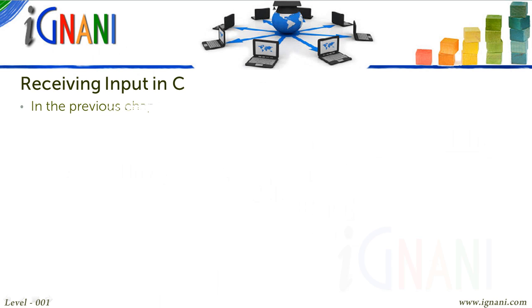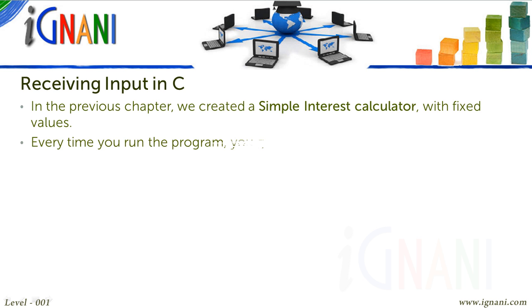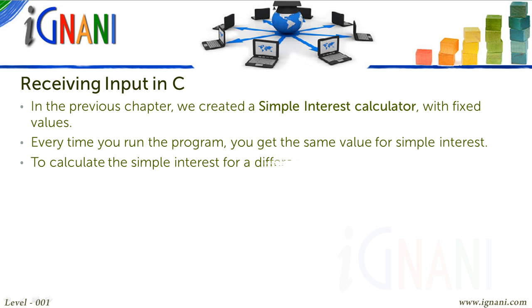In the previous chapter, we created a simple interest calculator with fixed values for the variables principal amount, number of years, and rate of interest. Every time you run the program, you get the same value for simple interest. If you wanted to calculate the simple interest for a different set of values, then you have to make changes to the code and recompile it. There wasn't any way a user can calculate the simple interest for a different set of values without changing code and recompiling it.